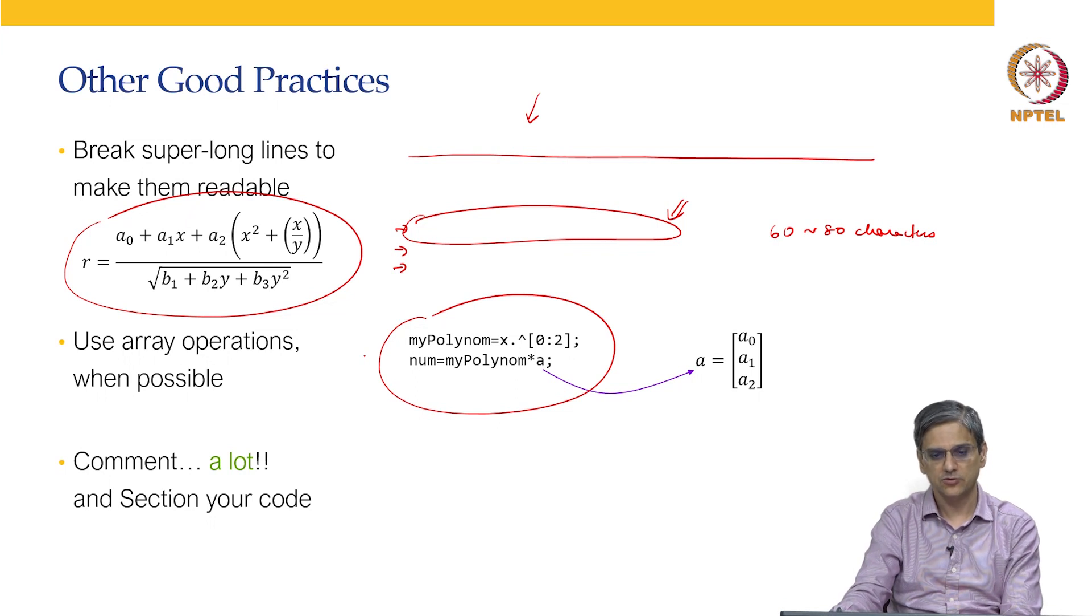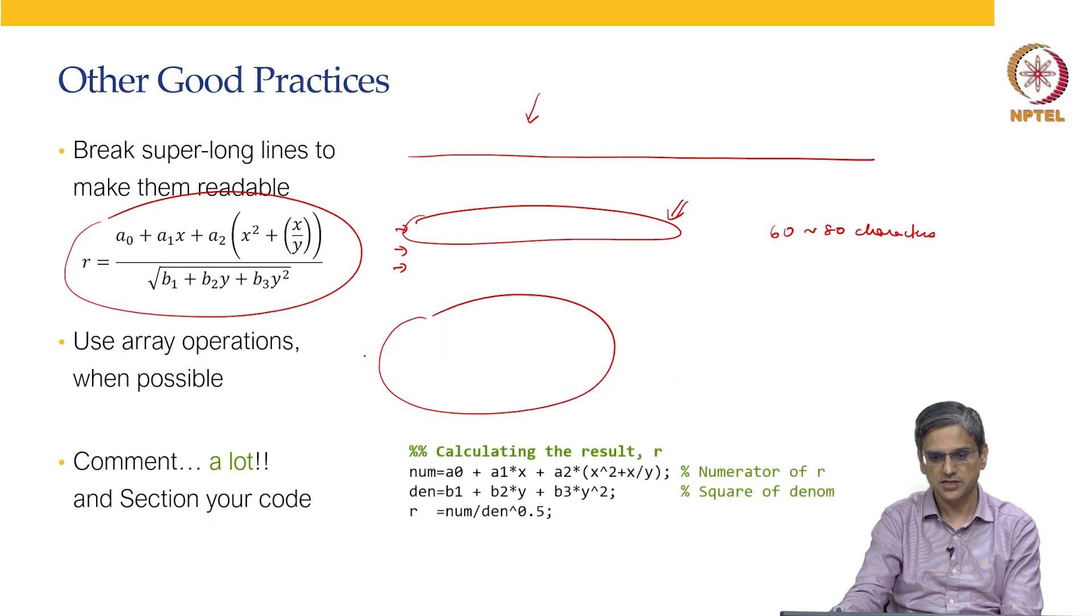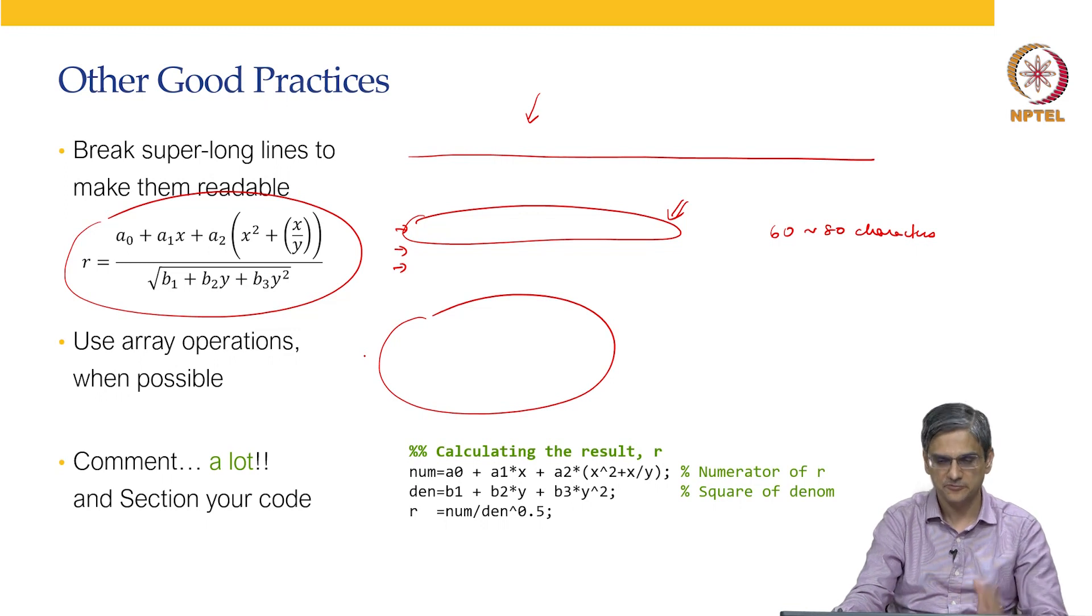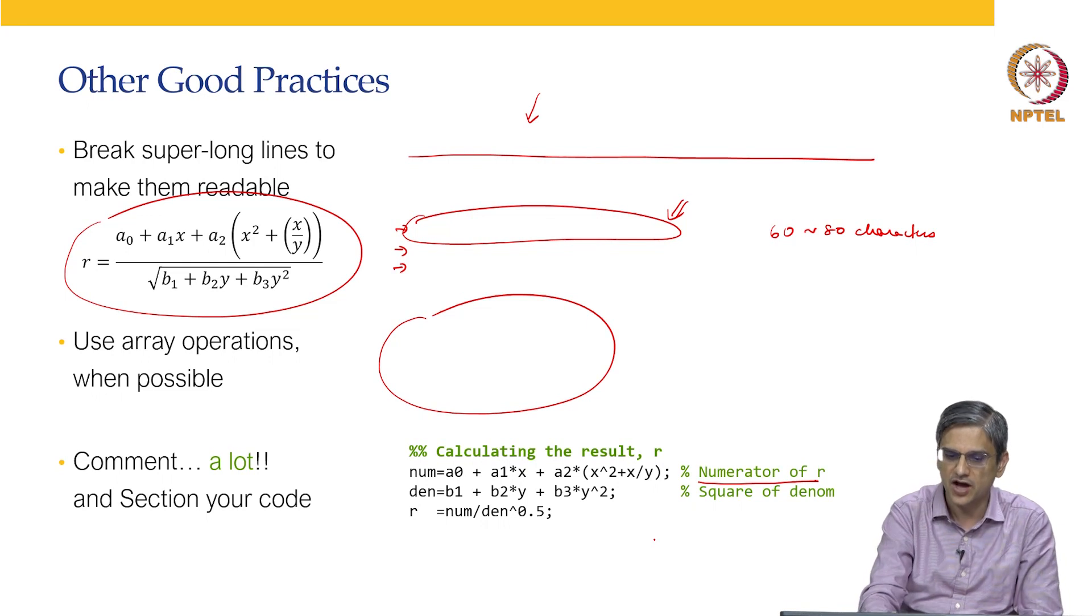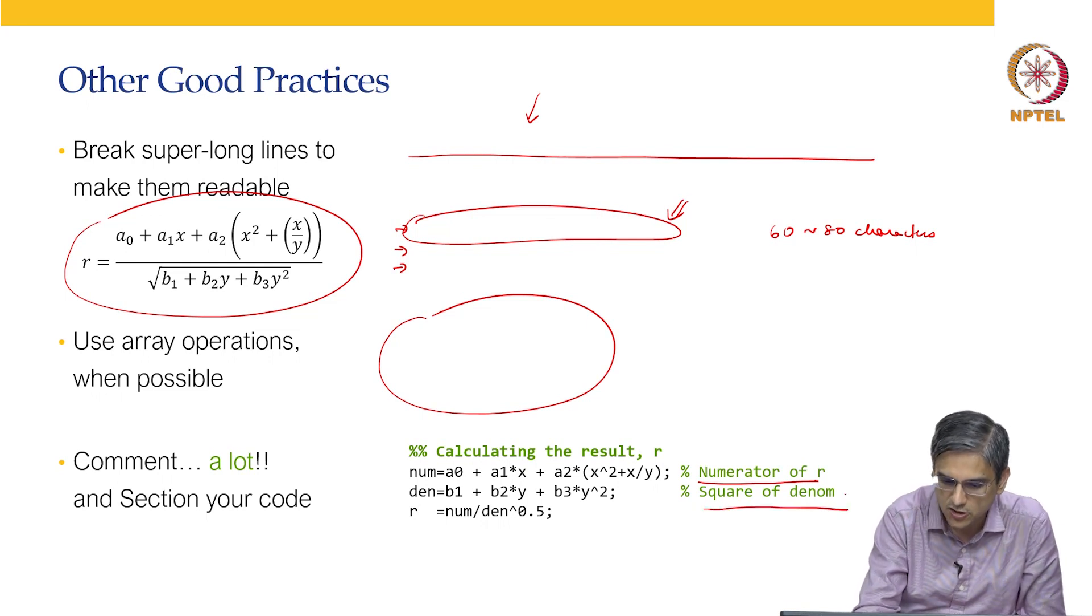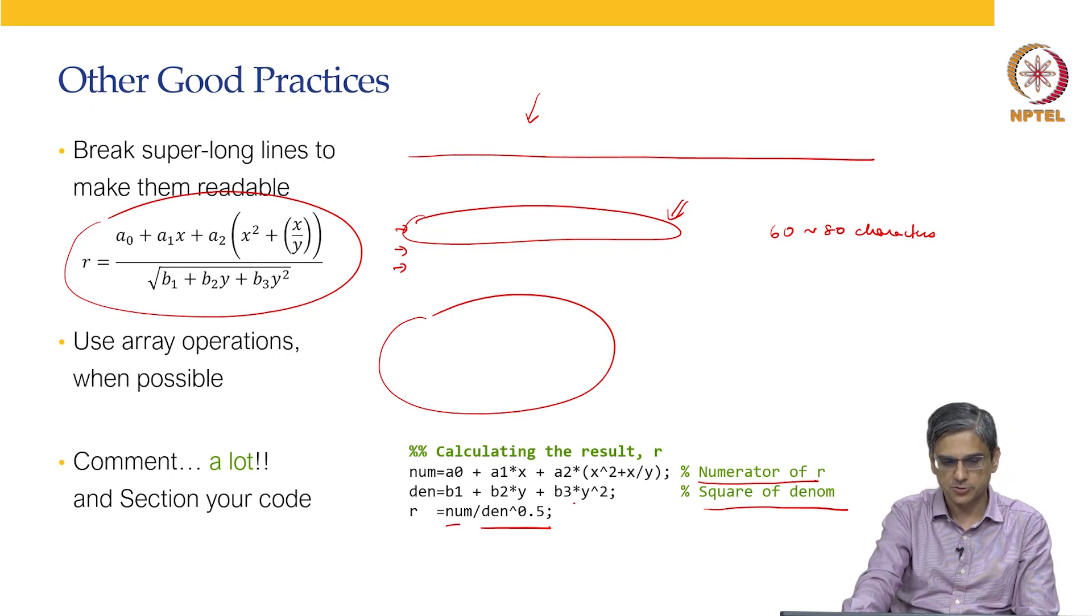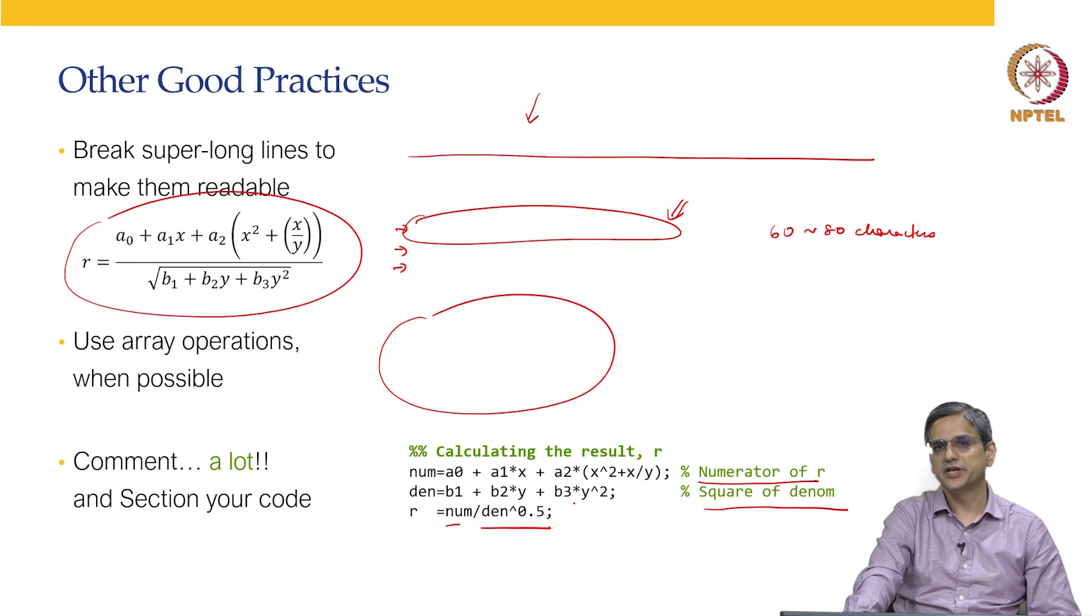The final suggestion that I have is comment. Comment a lot as many comments as you want. You should feel free to put so many comments. For example, the comment over here is this is numerator of r. Numerator divided by then square root is going to be equal to r. This makes your code readable so that if anybody looks at the code, they exactly know what is happening.